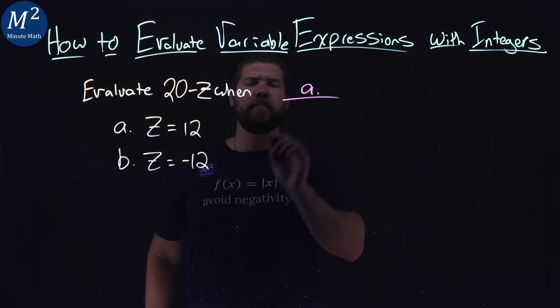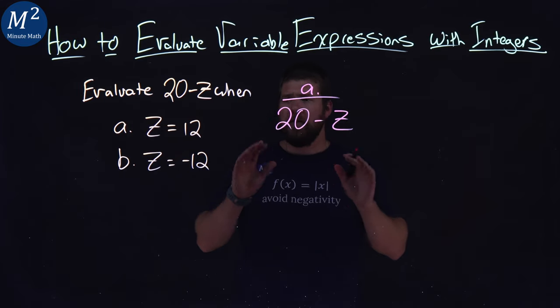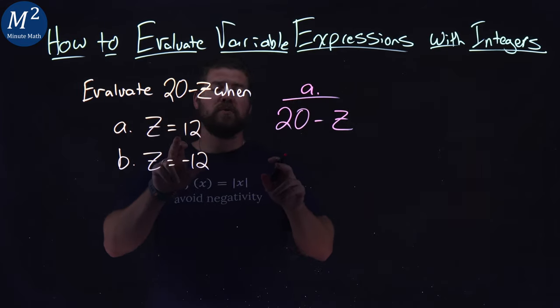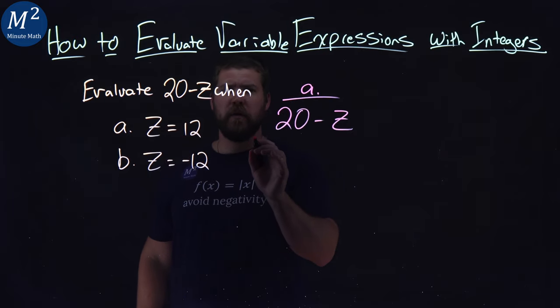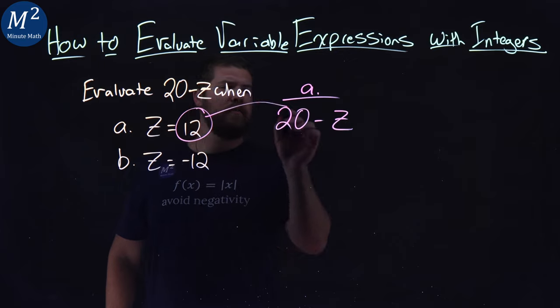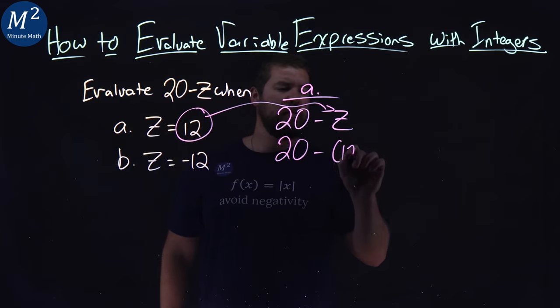Let's start with Part A. I have to start with my 20 minus my z. Then we want to substitute in 12 for z. So instead of 20 minus z, we have 20 minus 12. I'm going to take this 12 and substitute it in for that z. So now I have 20 minus 12.